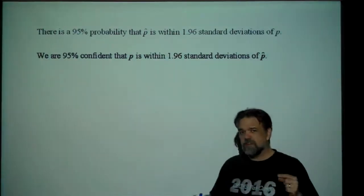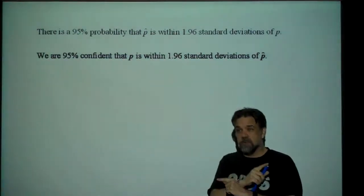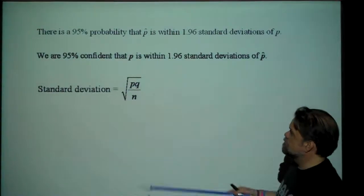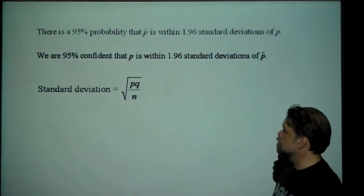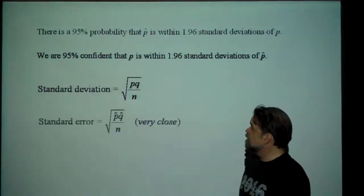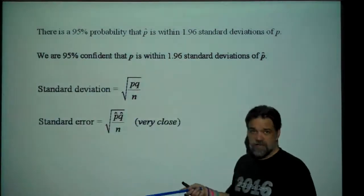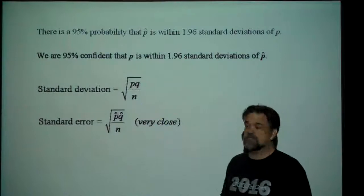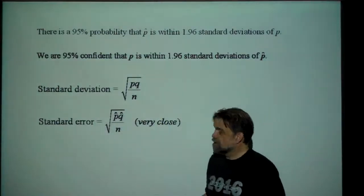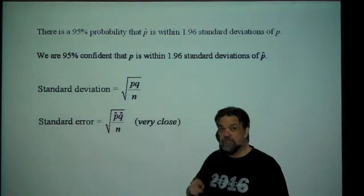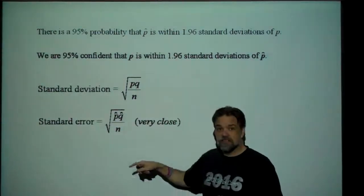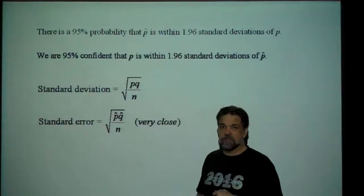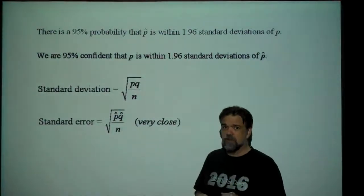Since we get a measurement of p-hat and we don't know what p is, we have to reword this and say: we're 95% confident that p is within 1.96 standard deviations of p-hat. There's a difference in language — we went from 95% probability to 95% confident. Instead of talking about how close p-hat is to p, we're talking about how close p is to p-hat. Our standard deviation is the square root of p-q over n, but we use the standard error instead — the square root of p-hat times q-hat over n — because we don't know what p is. We can calculate the standard error from our sample, but we can't calculate the standard deviation.